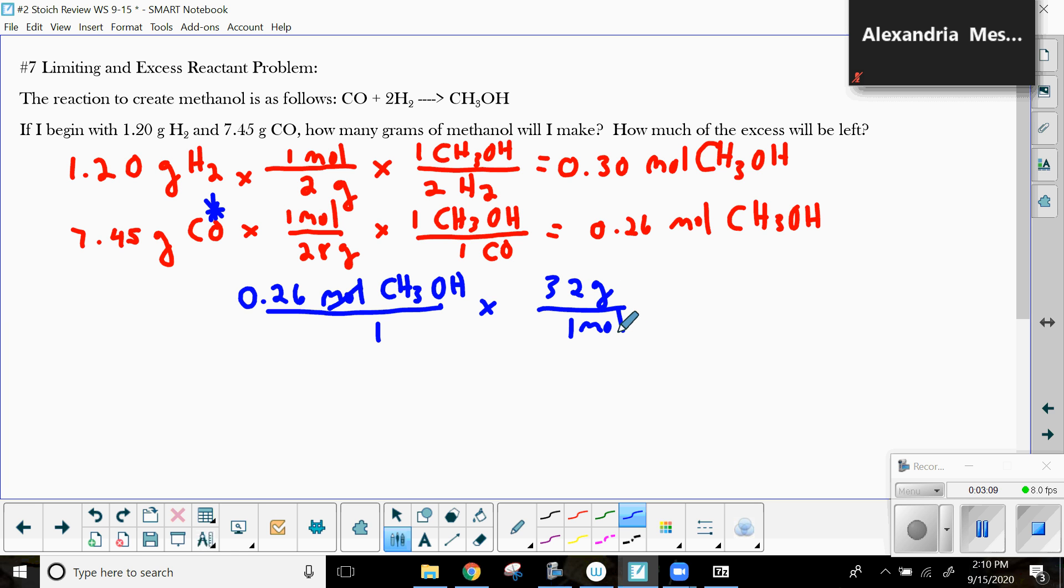So, put moles on the numerator here, moles in the denominator, so moles cancel. And I will find I get with 3 sig figs is what I should have rounded to, 8.32 grams of methanol. That's the first part of the problem, finding which one is the limiting reactant, which is carbon monoxide, and how much product you're going to make. And that's going to be 8.32 grams of methanol.